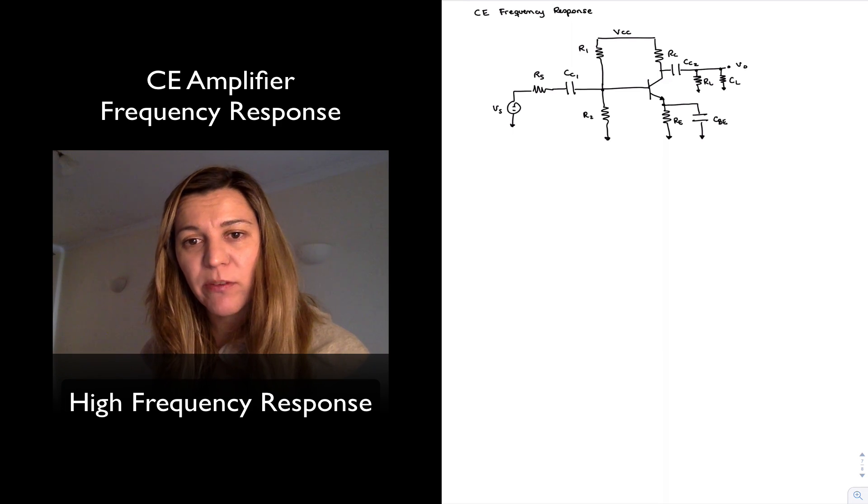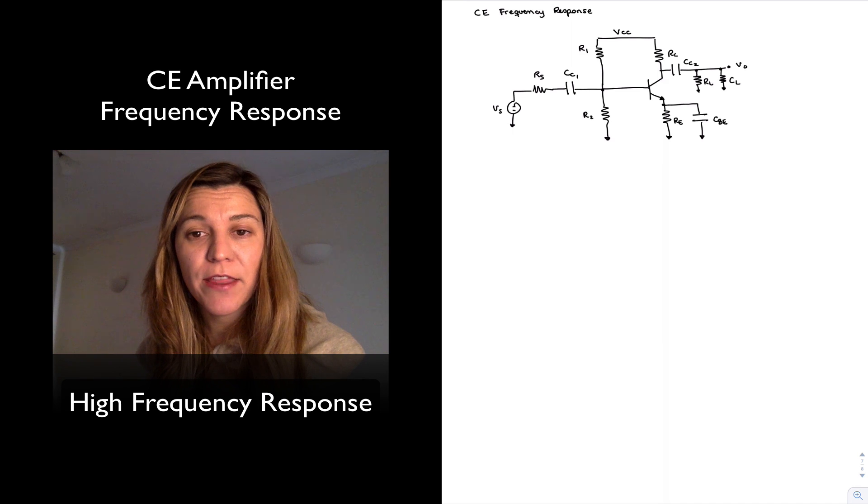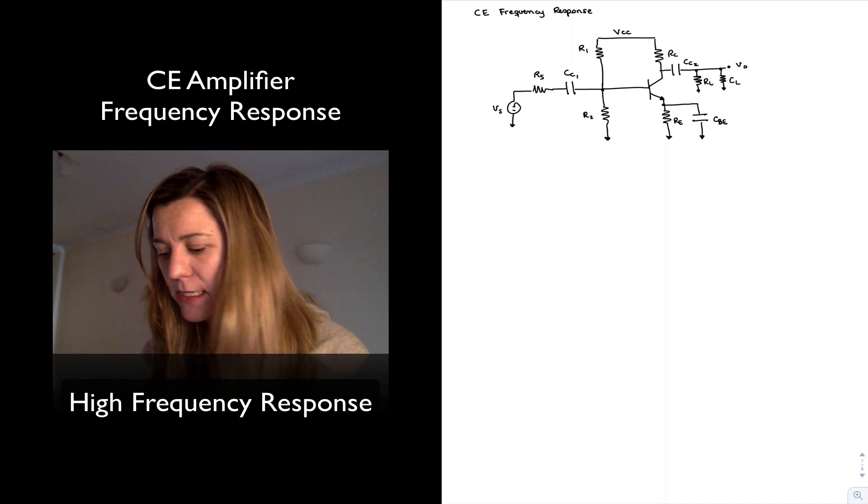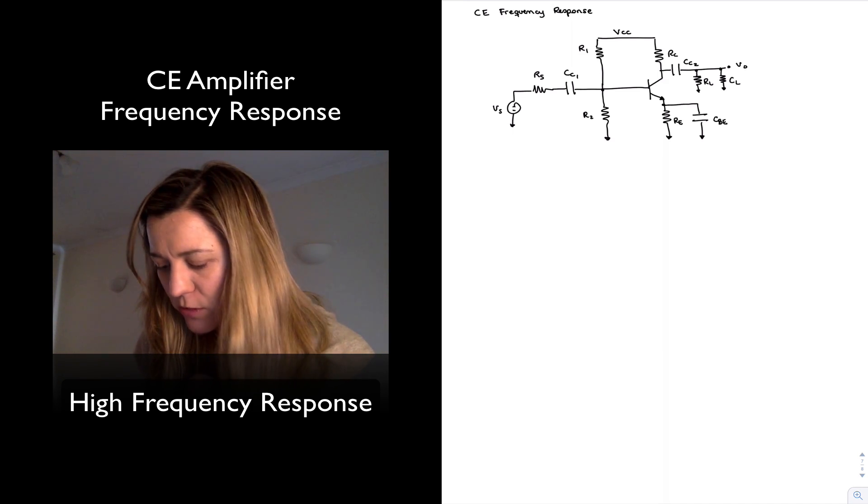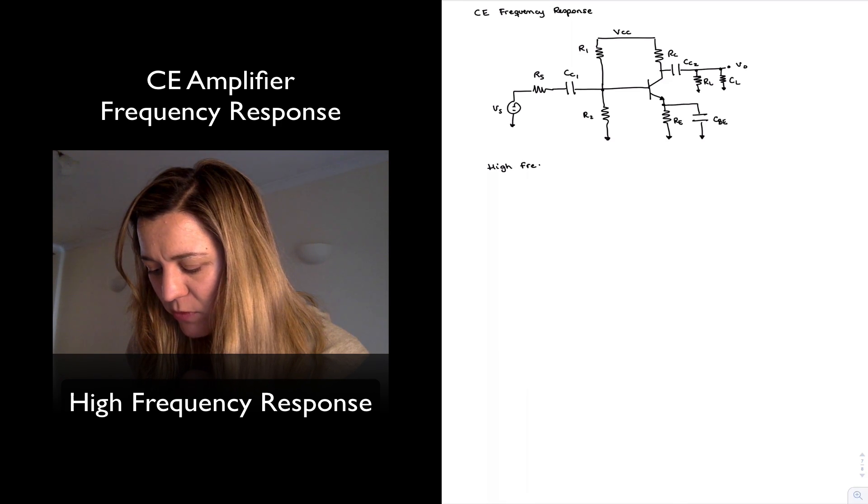So we're just going to come up with general expressions. But again, the important thing is that you get familiar with the process of determining what are the capacitances that you need to consider, how do you calculate them, how do you calculate the Thevenin resistance across those capacitances. High frequency response for this common emitter amplifier is just the same one from the previous example.